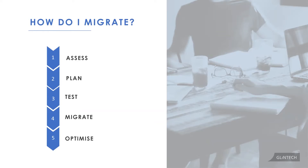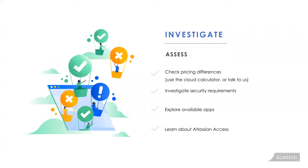The first step — assess — means investigating the pricing differences using the cloud calculator, since you may qualify for a reduced rate with more users. Look at your organization's security requirements to ensure the applications are compliant. Explore available apps, compare what you have on-prem versus cloud, learn about Atlassian Access, and understand what might complicate the upgrade — for example, whether your instance needs to be upgraded first.